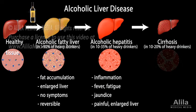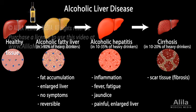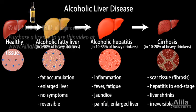Cirrhosis is when a large amount of hepatic tissue is permanently replaced with non-functional scar tissue, known as fibrosis. Symptoms range from those of alcoholic hepatitis to those of end-stage liver disease. The liver eventually shrinks. Cirrhosis cannot be reversed.